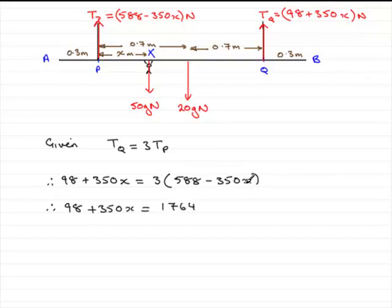And three times minus 350x is going to be minus 1050x. If I add 1050x to both sides and subtract 98 from both sides, what we get is 1400x equals 1666. Divide both sides by 1400.